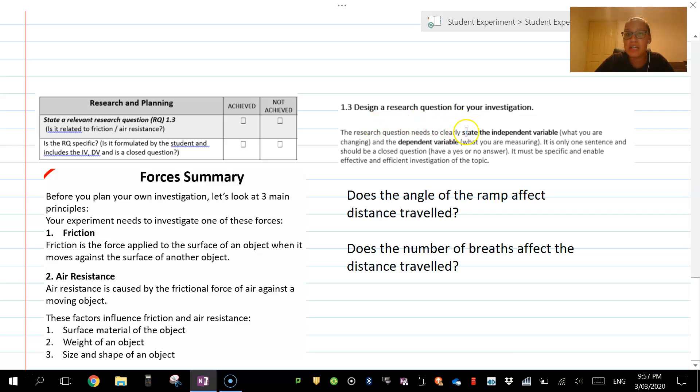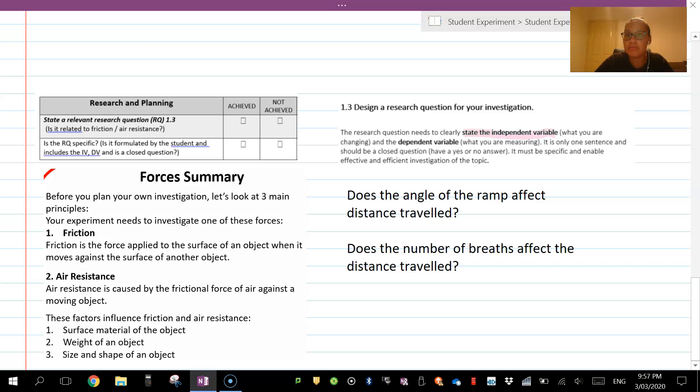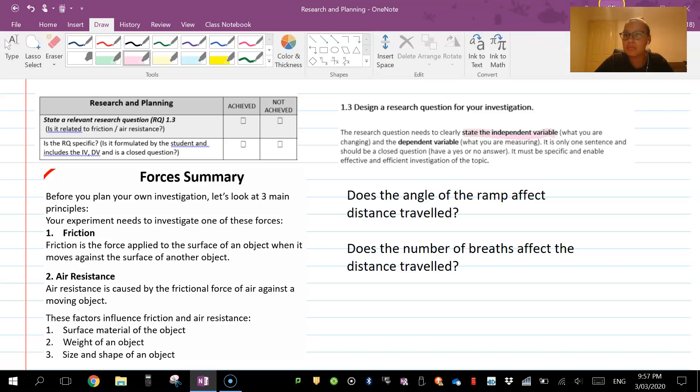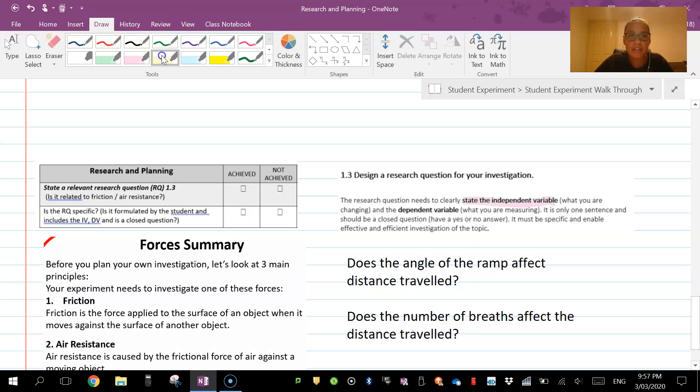It says the research question needs to have an independent variable clearly stated. State the independent variable—what you are changing—and the dependent variable. I'm going to use two different colors here to explain and help you. These are the two research questions that we came from our original experiment.